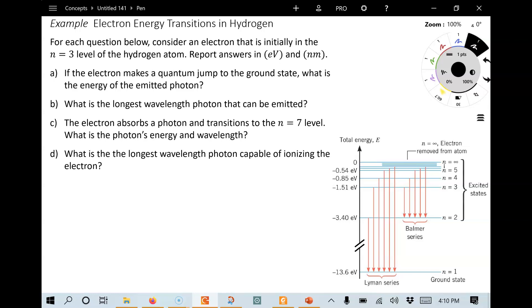Now, for each of these, A through D, we're going to consider that the electron in the hydrogen atom starts in the n equals 3 level, so right here. Let's just go ahead and use the Bohr formula to confirm that that is the energy for the n equals 3 state.